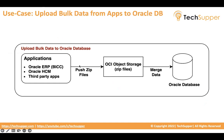Let us consider you have applications — Oracle ERP, Oracle HCM, and third-party applications. Those applications can generate huge data that we need to send into an Oracle database. ERP has a connector called BICC, Business Intelligence Cloud Connector, which can push zip files into OCI object storage. HCM similarly pushes data as a zip file into OCI object storage. This zip file data must be loaded into Oracle database and may contain millions of records.